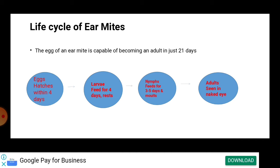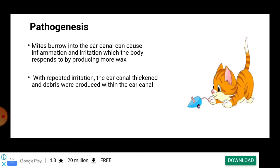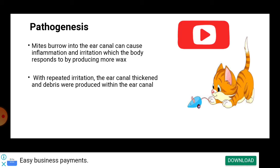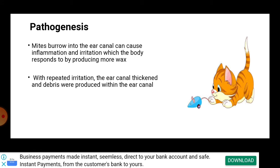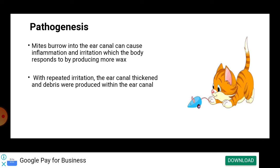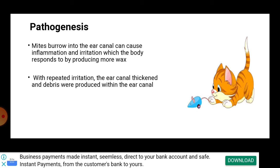After the larval stage, the nymph stage develops and feeds for three to five days, then molts to the adult stage, which we can see with the naked eye. The mites then burrow into the ear canal, causing inflammation and irritation, and the ear responds by producing more wax. With repeated irritation, the ear canal thickens and debris accumulates.